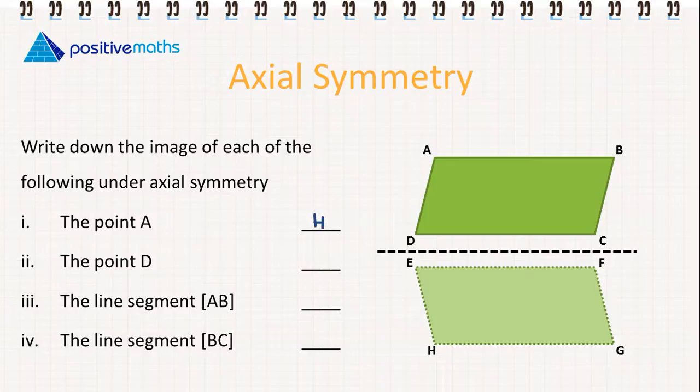So the point D. Again, if we fold it on the dotted line, D would now fall on E.